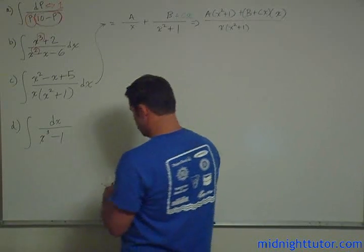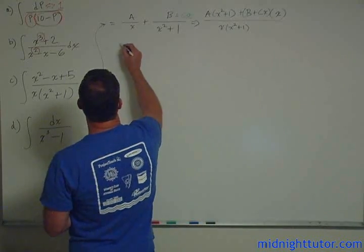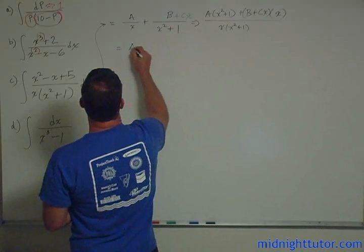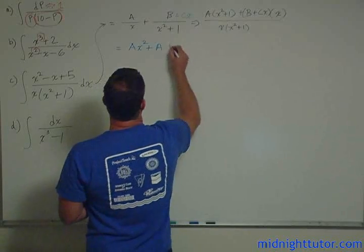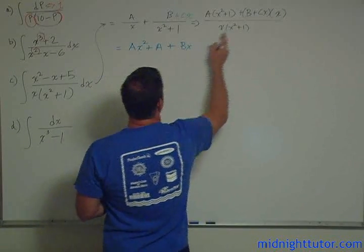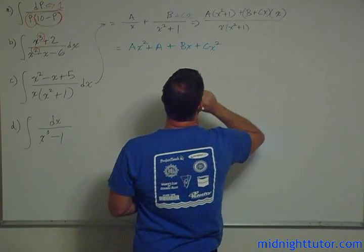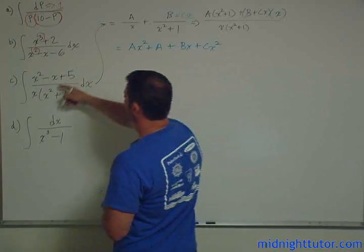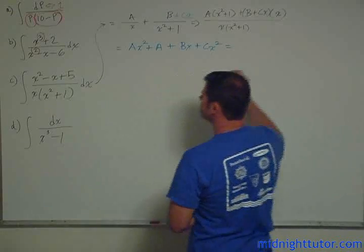So now we can just create our three equations. So we have, first of all, the x squared. So let's expand this. So this gives us then A x squared plus A plus Bx plus Cx squared. And we want that to equal x squared minus x plus 5.